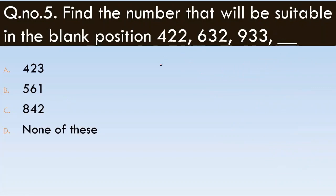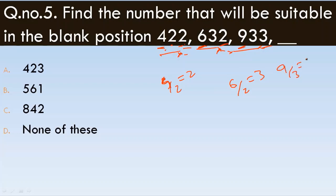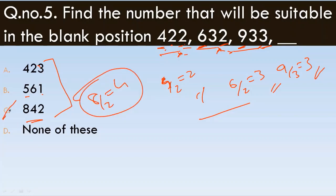Find the number suitable in the blank position. The sequence appears to involve dividing by 2 or a halving pattern: 4, 2, 9, 5, 6, 9, 8, 4, 2. Multiplying and tracing the pattern, the answer should be 8, 4, 2.